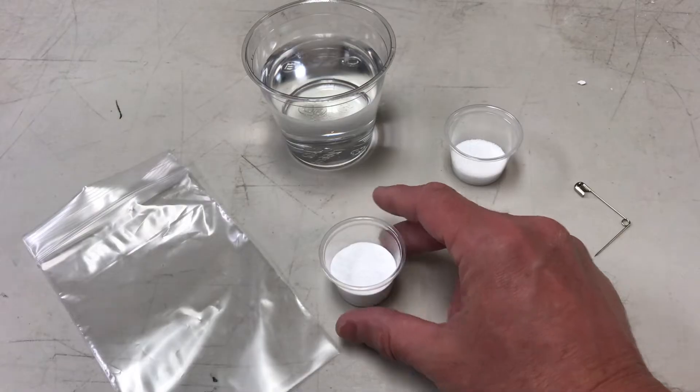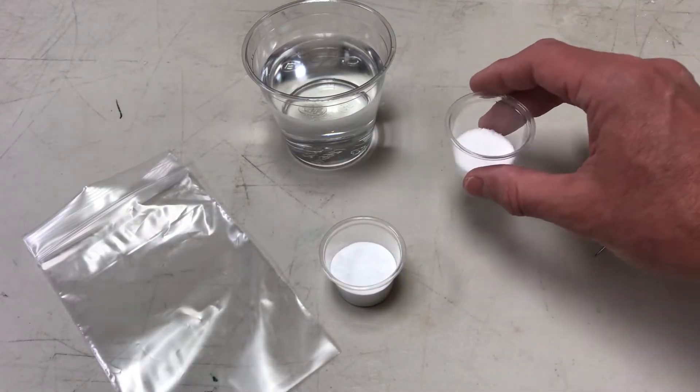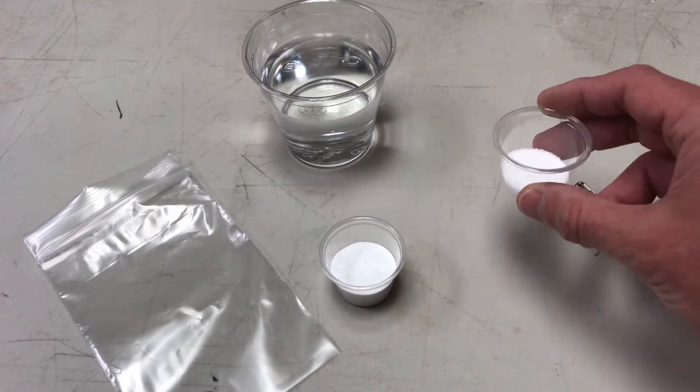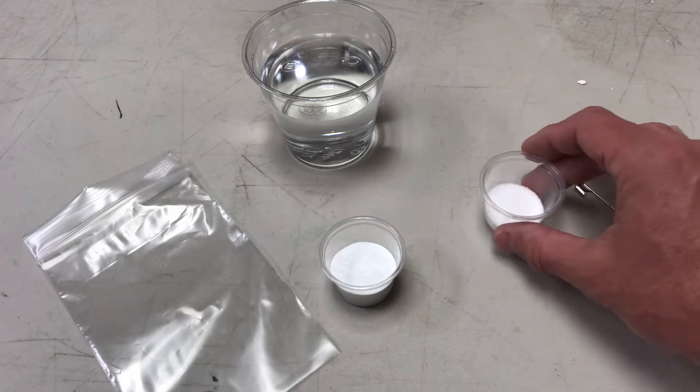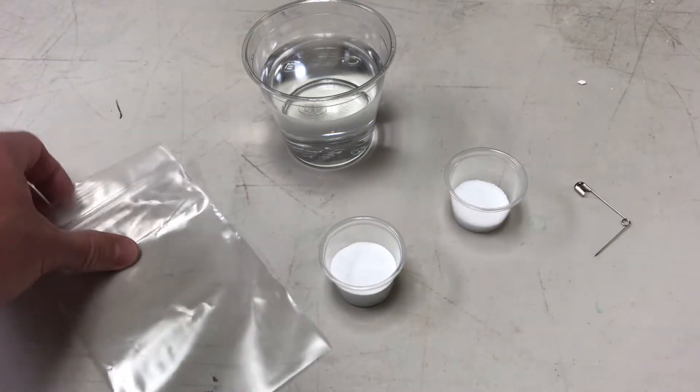So what we have here is about a tablespoon of baking soda, about a half tablespoon of citric acid. You can swap this out for roughly about a tablespoon of vinegar, and some water.